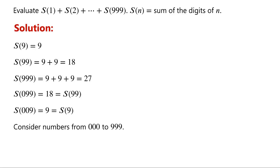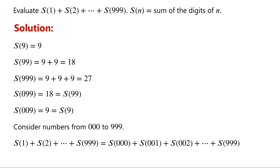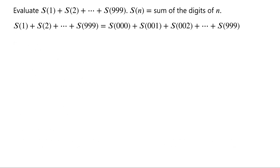We consider numbers from 000 to 999. There are a total of 1000 numbers. Note that we can think of each number as having 3 digits, with leading zeros for numbers from 1 to 99. From above, we know that the sum of s(1), s(2), up to s(999) is equal to the sum of s(000), s(001), s(002), up to s(999). Note that s(0) equals 0. Each number is viewed as having 3 digits.